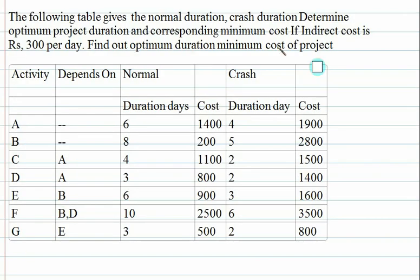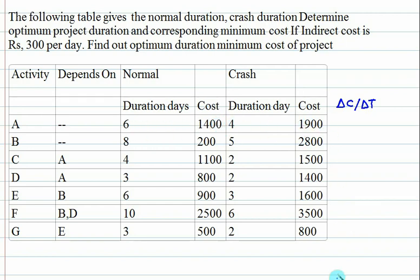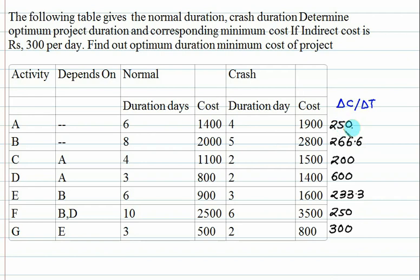Let's consider this numerical and first calculate the crash cost slope using delta C by delta T. This is 1900 minus 1400 divided by 2, so your crash cost slope comes out like this. Let's prepare the network for this.